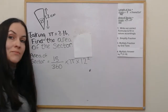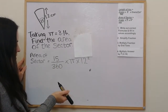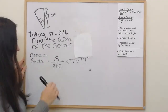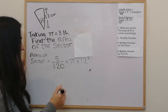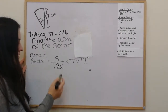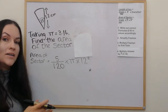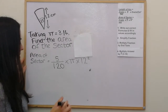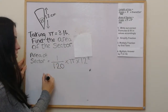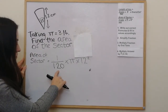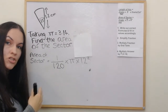The second step is to simplify the fraction 15 over 360. Both divide by 3, giving 5 over 120. Then both can divide by 5 — a useful tip: if a number ends in 0 or 5 it's always in the 5 times table. Dividing the top by 5 gives 1. For the bottom, a trick is to divide 120 by 10 to get 12 and then double it to get 24. So the fraction simplifies to 1 over 24.